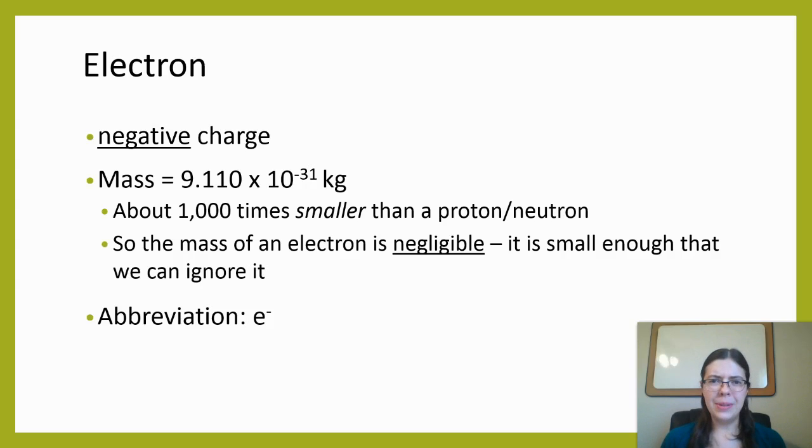What chemists say is that the mass of an electron is negligible, meaning it's small enough we can ignore it. So yes, electrons technically do have mass, but it's so teeny tiny small we can ignore the mass that the electrons contribute to the overall atom mass. And then the abbreviation for an electron is a little bit different: it's E minus. That's because we have so many different words that begin with E in chemistry, so E minus for the electron.